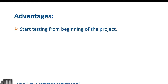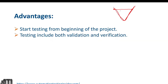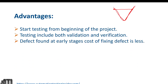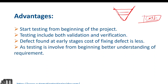Advantages of V model: Testing starts from the beginning of the project — each testing phase starts from the very first phase. Testing includes both validation and verification. Defects found at an early stage cost less to fix, because each phase involves verifying documents, which means fewer defects are found during actual testing. As testing is more involved from the beginning, there is a better understanding of the requirements and documentation.